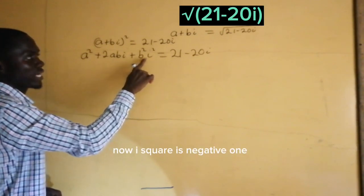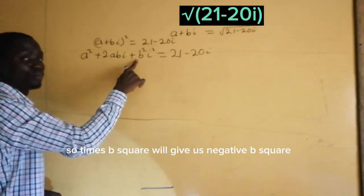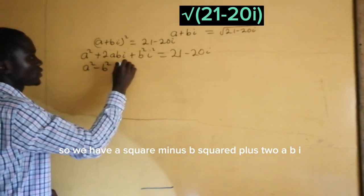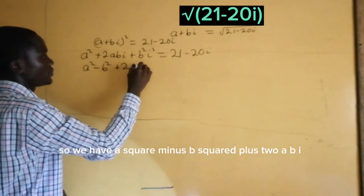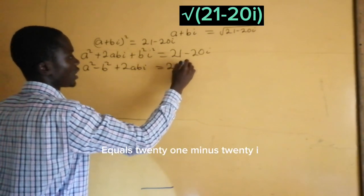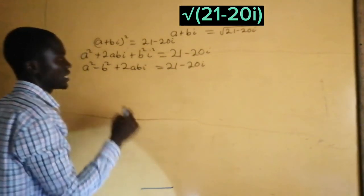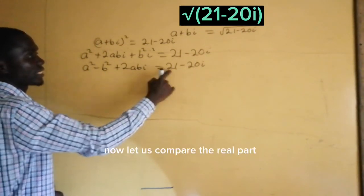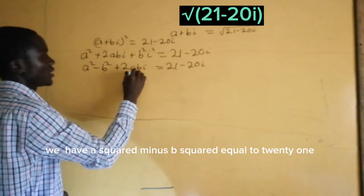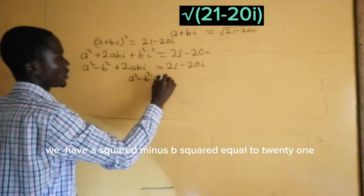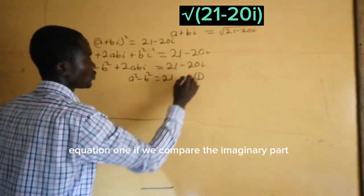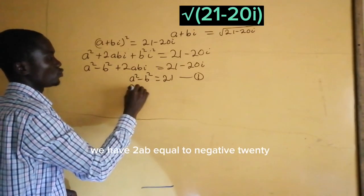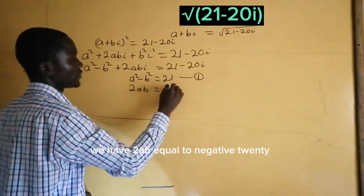Now i squared is negative 1, so it turns b squared into negative b squared. So we have a squared minus b squared plus 2ab·i equals 21 minus 20i. Let us compare the real parts: we have a squared minus b squared equal to 21. If we compare the imaginary parts, we have 2ab equal to negative 20.